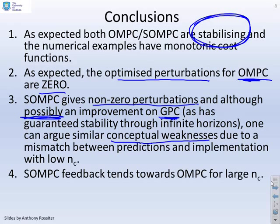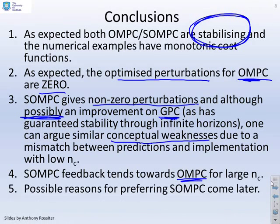The SOMPC feedback, however, does tend towards OMPC for large NC. And possible reasons for actually wanting to use an algorithm which seems to have this built-in mismatch will come later.